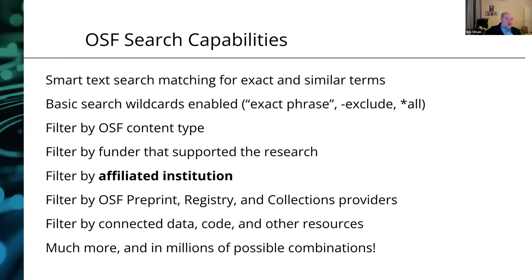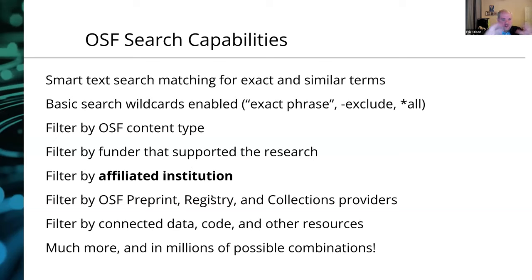Before jumping into the live demo, here's a quick summary of the new search features on OSF. We have the text searching and wildcards you'd expect on a data repository, but beyond that you can filter by OSF content types — where in the lifecycle that research is coming from — filter by funders, affiliated institutions, and providers. We support community services for registries, collections, and preprints, and you can filter by whether resources have connected data, code, and other resources.